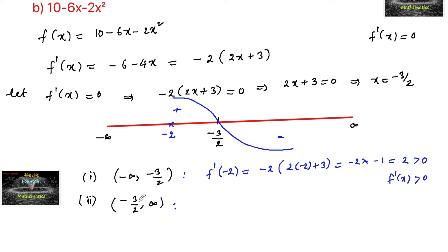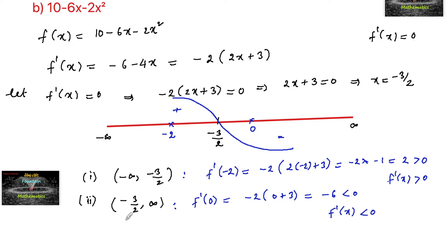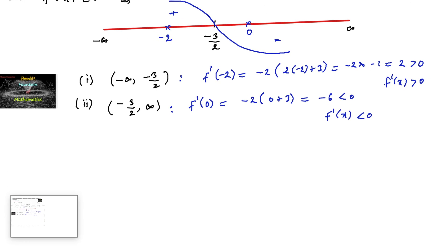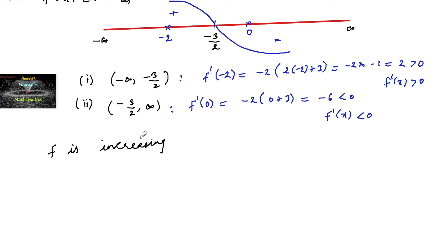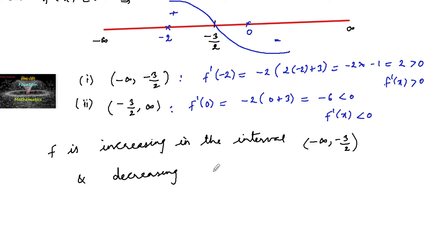For the interval minus 3 by 2 to infinity, take the value x equals 0. Then f dash of 0 equals minus 2 times (2 times 0 plus 3) equals minus 2 times 3 equals negative 6, which is less than 0. So f dash of x is less than 0 in the interval minus 3 by 2 to infinity. We conclude the given function f is strictly increasing in the interval minus infinity to minus 3 by 2, and strictly decreasing in the interval minus 3 by 2 to infinity.